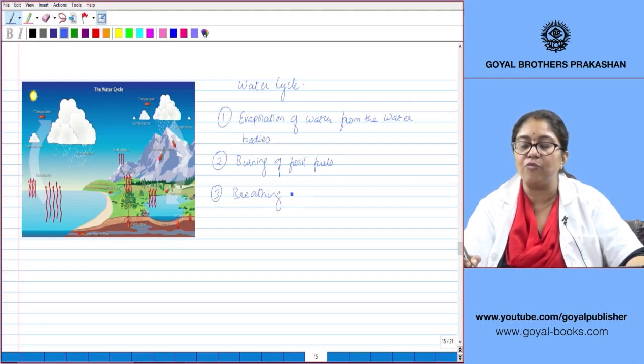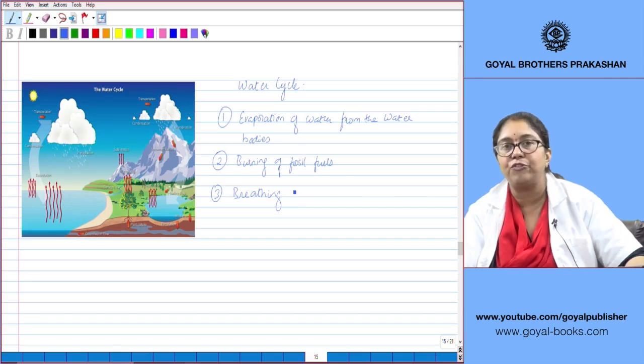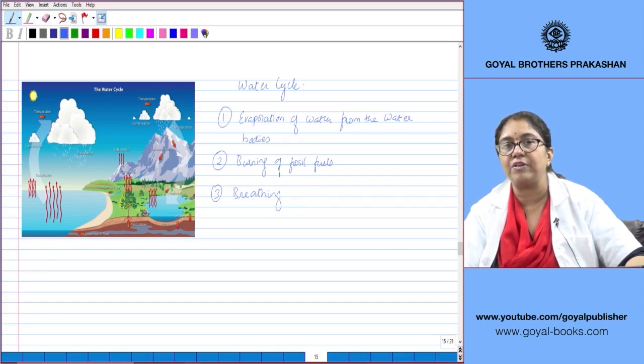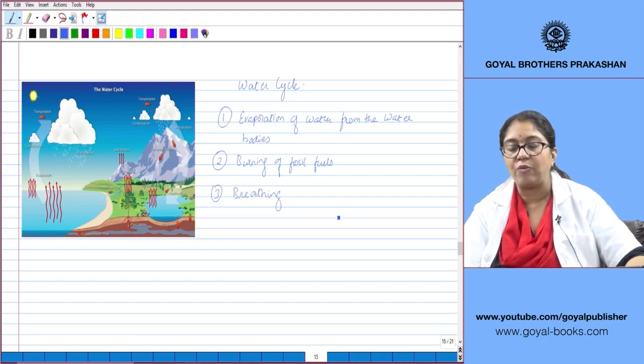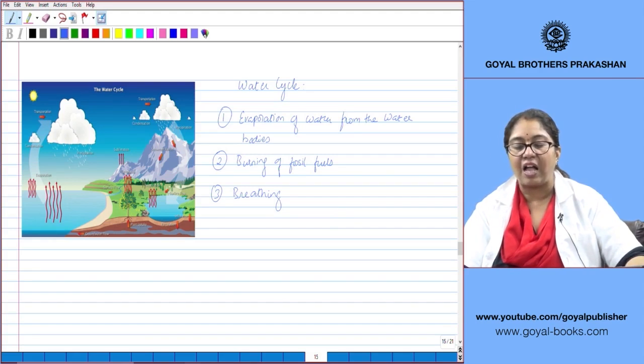Three is by breathing. The process of respiration involves the breakdown of food to liberate carbon dioxide and water vapor. This water vapor is exhaled out by us and all living organisms on this planet after respiration.